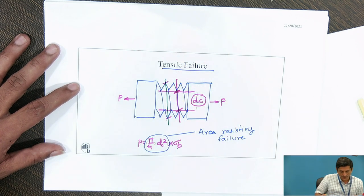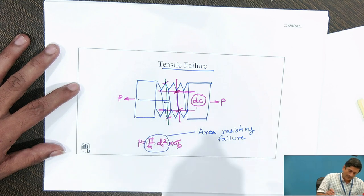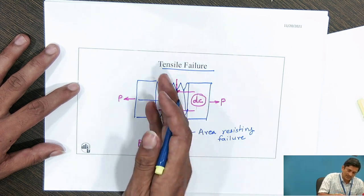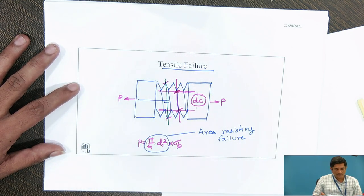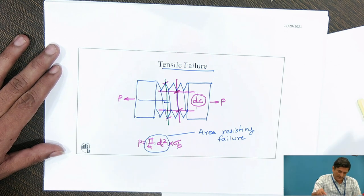Again, our thumb rule can be used. If I extend this, it is perpendicular. This is approximation. It is perpendicular to the line of action of the force and I can say that this failure is a tensile failure.